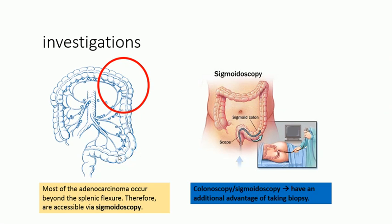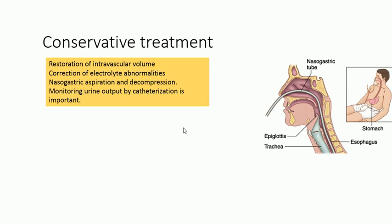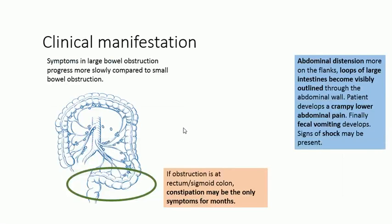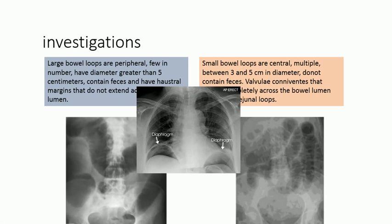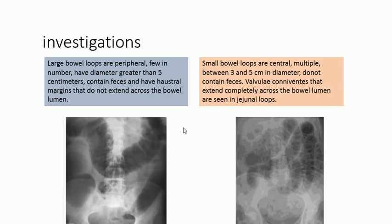Most adenocarcinomas are in this area, so sigmoidoscopy provides good access. Colonoscopy can also be done if sigmoidoscopy is negative. The advantage of colonoscopy and sigmoidoscopy is that a biopsy can be taken for histopathological diagnosis. Radiological examination is also important, and on X-ray, if there is perforation, you will see gas under the diaphragm — an important feature of bowel wall perforation.